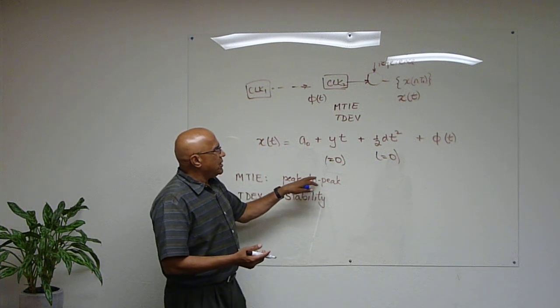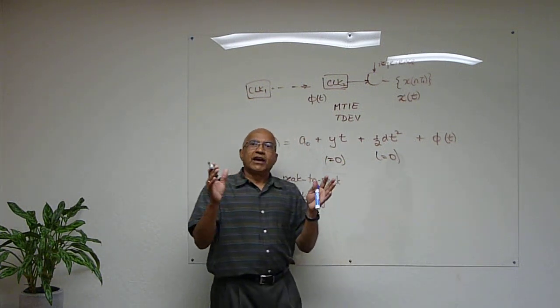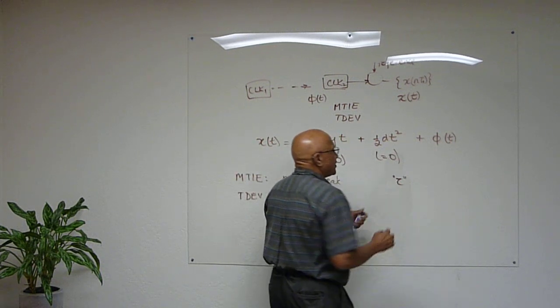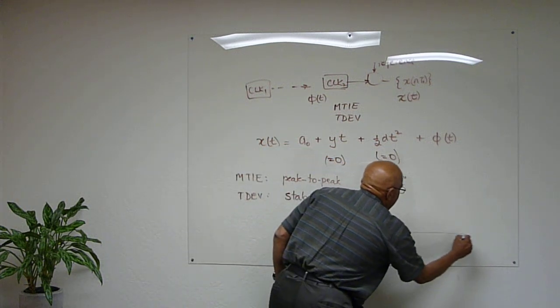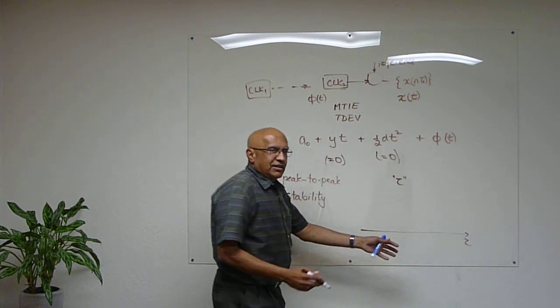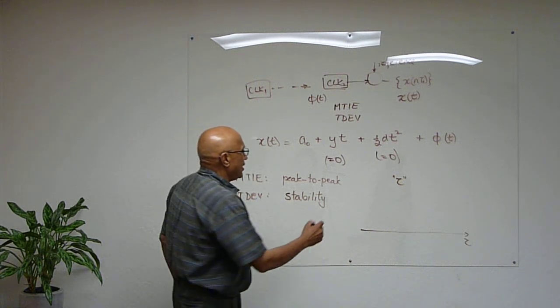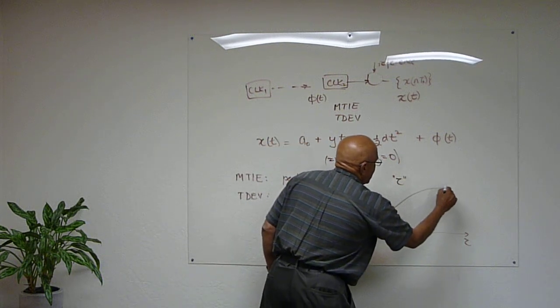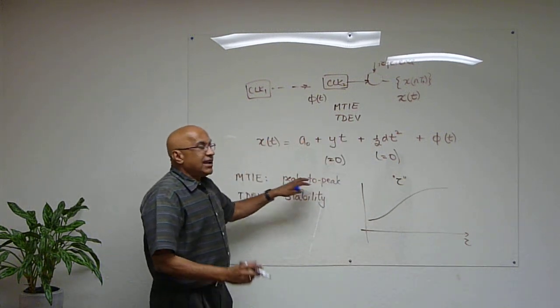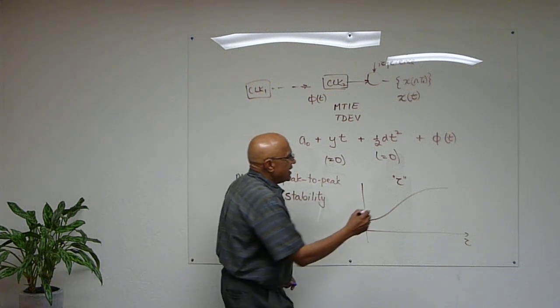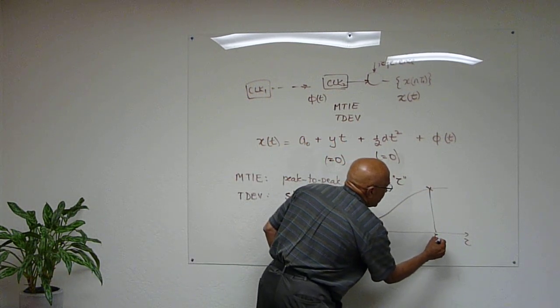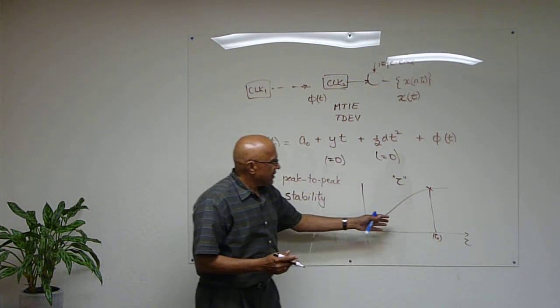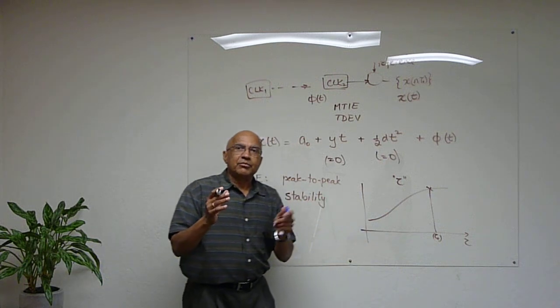The MTIE looks at the peak-to-peak of this noise over intervals of time. Now, these intervals of time traditionally are referred to as tau. So, when you think of tau on the x-axis, MTIE will be a curve which is, I am just going to show you some curve. It is non-decreasing, always increases. And the value at some tau naught, for example, is the peak-to-peak observed over any interval of time tau sub zero.